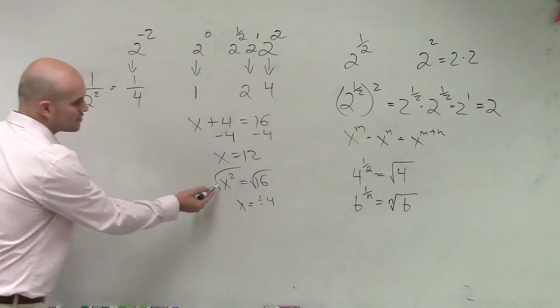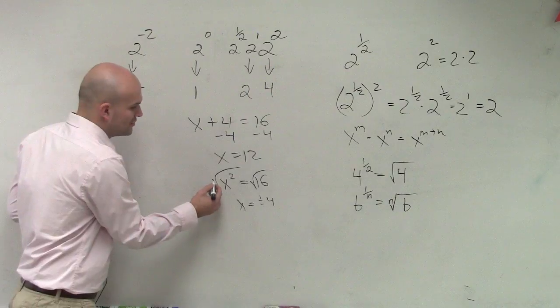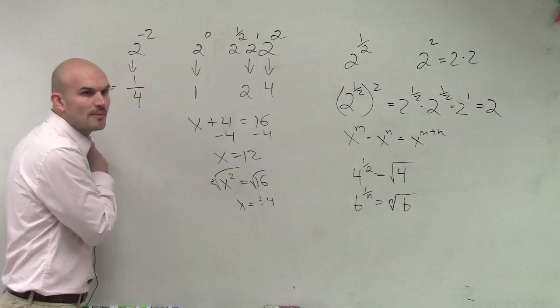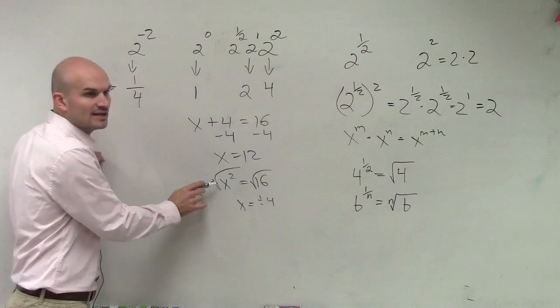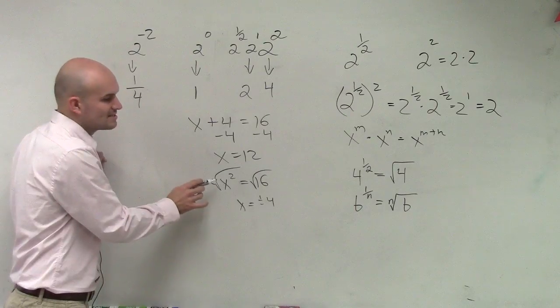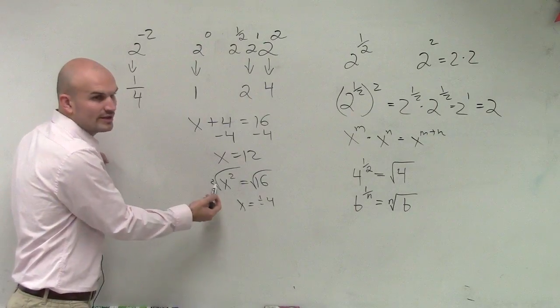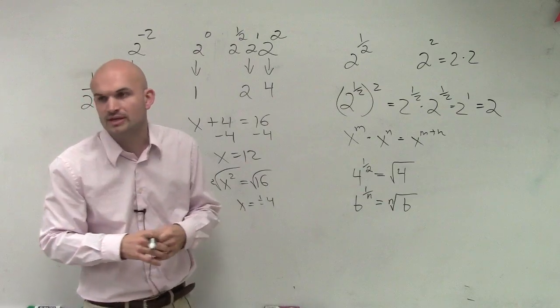Now, when we write a square root, we usually don't write the 2 there. But there is a 2 that represents there. The square root means what number multiplied by itself twice. That's the square root. So there is a 2 there. We just don't normally write it in there.